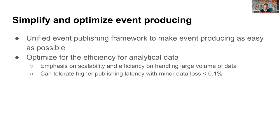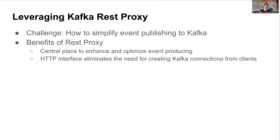Because analytical data is almost always processed and analyzed in aggregated fashion, minor data loss would not affect the quality of analysis. For example, if you collect 1 million results in an A/B test and randomly drop 100 events, most likely it would not affect the conclusion of the experiment. We found that data loss of less than 0.9% is acceptable for analytical events. So let's look at the measures we've taken to ensure efficiency and scalability in analytical event publishing.